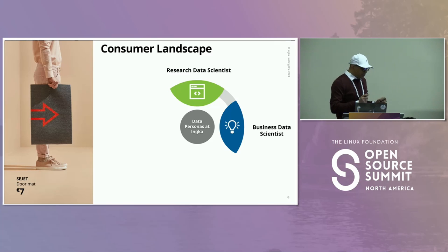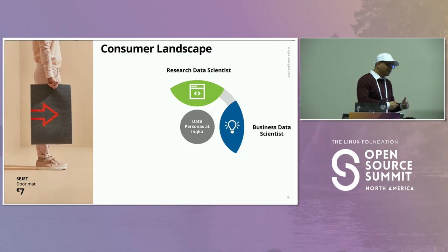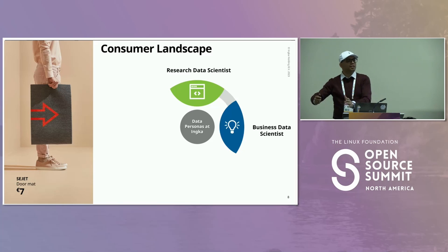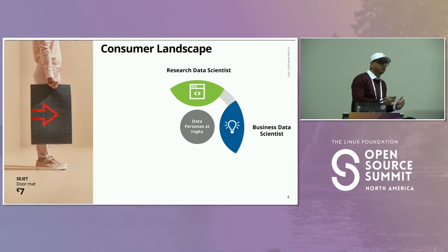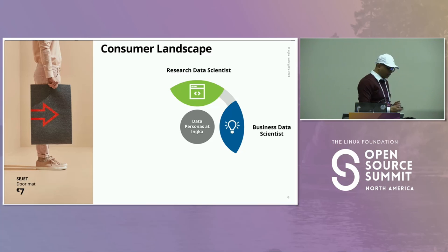Then we have the business data scientist, with a subset of business analysts and reporting analysts. These use data in a repeatable manner — reporting, predicting next sales, monitoring marketing campaigns. They don't sit centrally in a data science org; they're in all the stores as marketing managers or sales managers. They also use data and need ML — not necessarily complex neural networks, but they need to accurately predict sales, footfall, and the effectiveness of marketing campaigns.